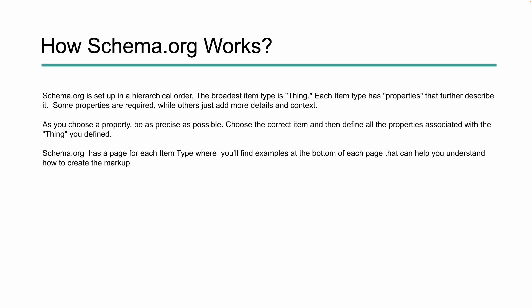So how does schema.org work? Schema.org is set up in a hierarchical order, with the broadest type called "thing." Each item has properties that further describe what it actually is. Some properties are required, while others just add more detail and context. If you look at the Google documentation, you'll see that certain types of structured data require name, URL, or other information, but you can also add extra properties to better describe it. You want to be as specific as possible, and you can use the search function on schema.org to do that.